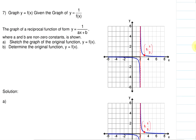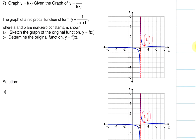We're going to take a look at the last question for this section 7.4, Reciprocal Functions. We're going to graph y equals f of x given the graph of y equals 1 over f of x. So we're going to be given the reciprocal function, and then we're going to be graphing the linear function that goes along with this reciprocal function.